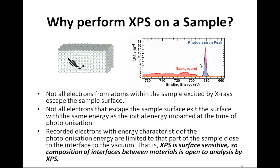For an aluminium K-alpha X-ray source, we expect a maximum of about 10 to 12 nanometers of material to contribute to a photoemission peak. All other electrons appear within the background signal and are not used for quantification. So the photoemission peak targets only the outermost layers of a material.